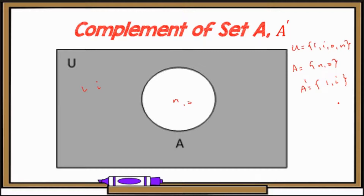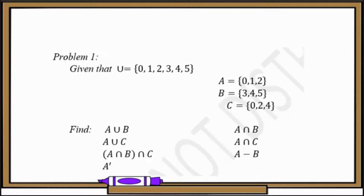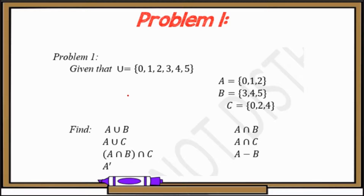I hope that was clear. Now we are going to apply it to certain problems. For problem number one, we are given the universal set: 0, 1, 2, 3, 4, 5. Set A is 0, 1, 2; set B is 3, 4, 5; and set C is 0, 2, 4. It will be helpful to draw Venn diagrams to distinguish the elements more easily. Let's try the first few problems.